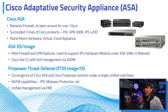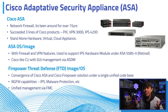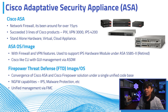You can also use FTD, or Firepower Threat Defense image/OS, on an ASA platform — the Firepower image running on ASA hardware. If you run the FTD image, you no longer manage the ASA via ASDM. Instead, you manage it via Firepower Management Center, or FMC. This also adds more capabilities, as it becomes a next-generation firewall solution.